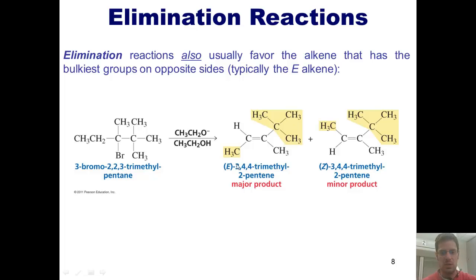The E-isomer, shown here, or the Z-isomer, shown here. Which of the two do you think is going to be more stable? Well, of course it's going to be the E-isomer, where the two largest groups are on opposite sides of the double bond.